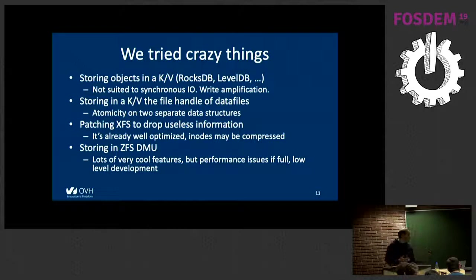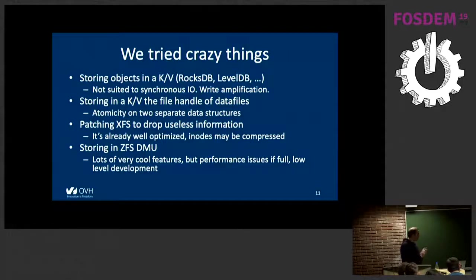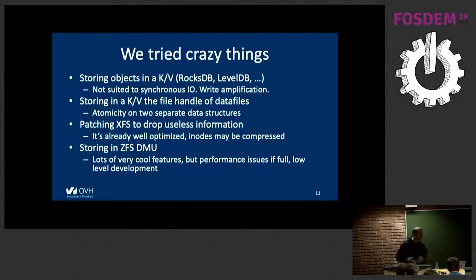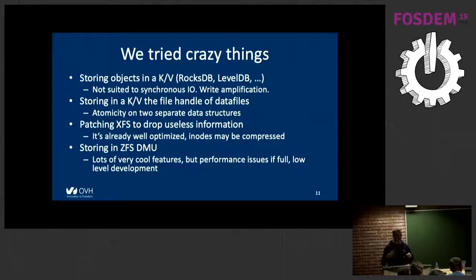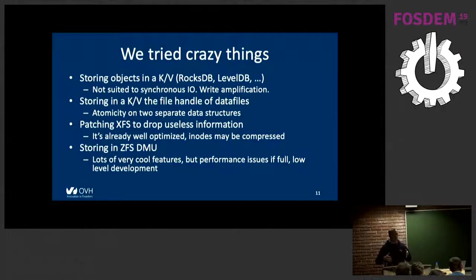We thought about patching XFS, but it's already well-optimized and there wasn't much to save. We also looked at ZFS, which is based on a layer called DMU, which is actually an object store — we thought we could put our objects there. It would bring cool features like snapshots and cloning, but it has performance issues when the file system gets full, and there's no stable API, meaning it could break at any upgrade. So we decided not to follow that idea either.